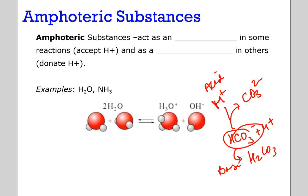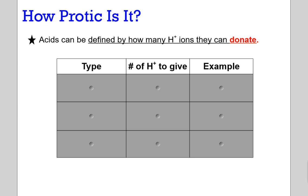So when we're asked questions about amphoteric or amphiprotic substances, we can look at that molecule and decide: is it able to gain a hydrogen ion? If so, what's its new formula? We'll play with that in class.